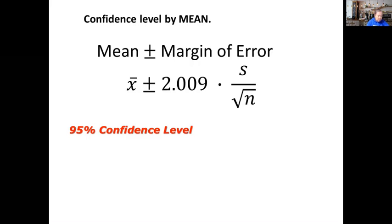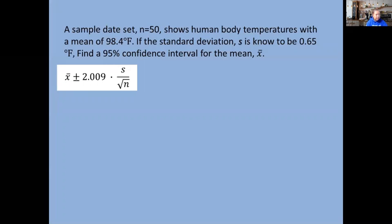We follow exactly this format to get the confidence level. If we still apply the 95% confidence level for a mean, then we are using this value, 2.009, to multiply the standard deviation divided by square root of sample size, n.